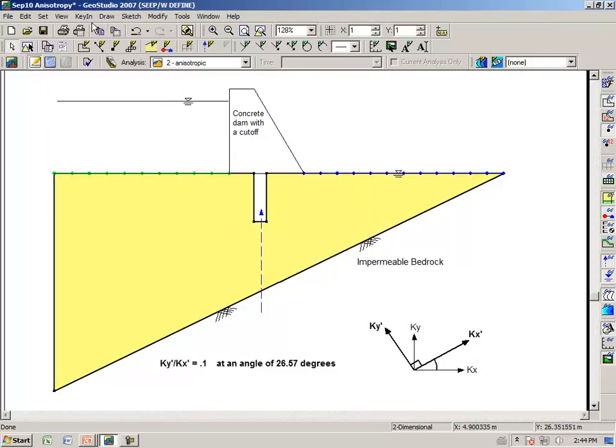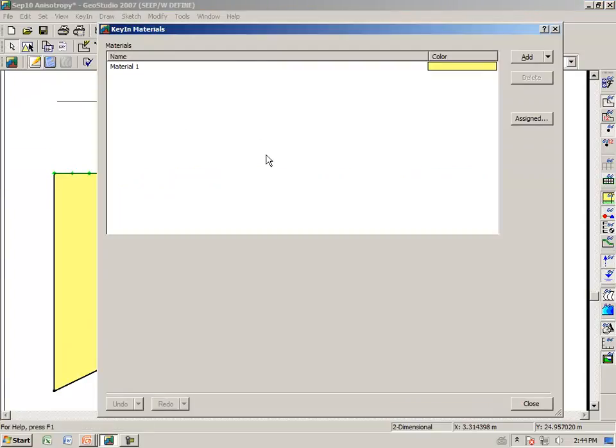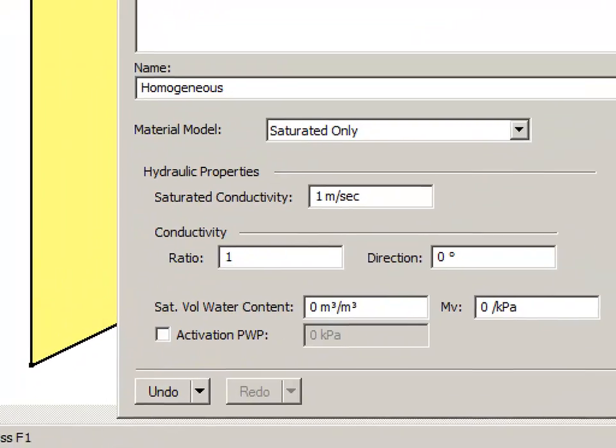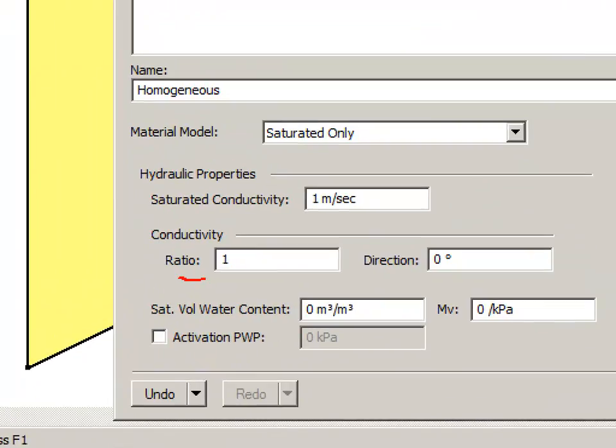Under key in materials, we have material number one. Let's rename this material homogeneous. And notice that we have a ratio here of one, meaning that kx and ky are the same.